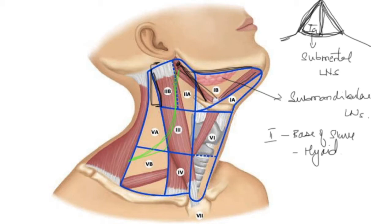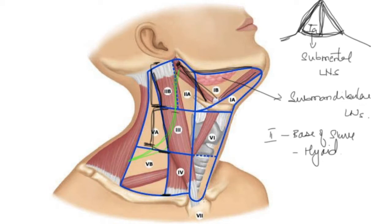Level 3 is between the hyoid superiorly and the cricoid inferiorly. Anteriorly it is bounded by the strap muscles, and posteriorly by the posterior border of the sternocleidomastoid. Level 4 extends from the level of the cricoid down to the level of the sternal notch. Level 4 is again bounded posteriorly by the posterior border of the sternocleidomastoid and anteriorly by the strap muscles.